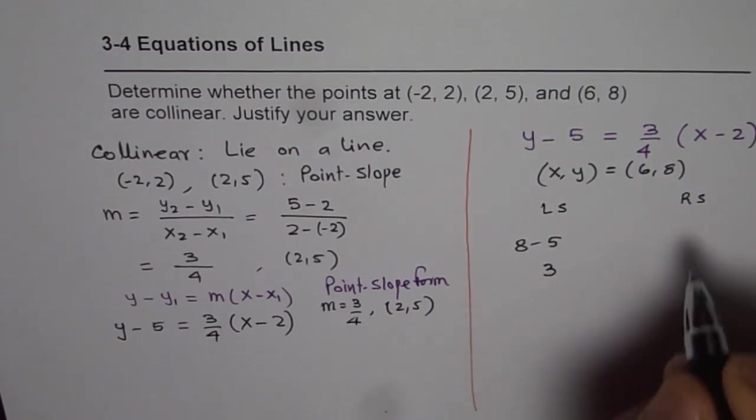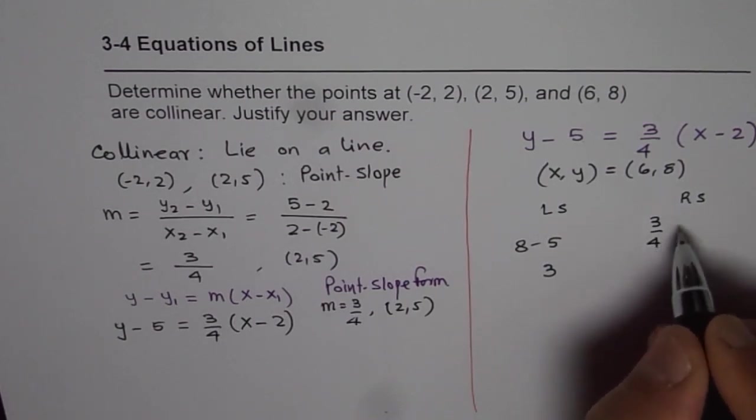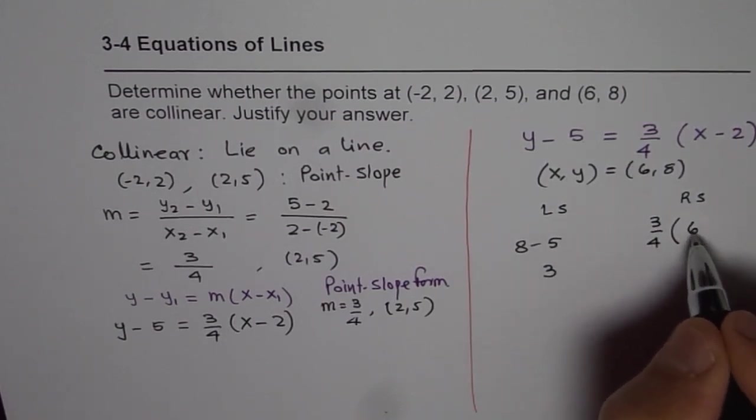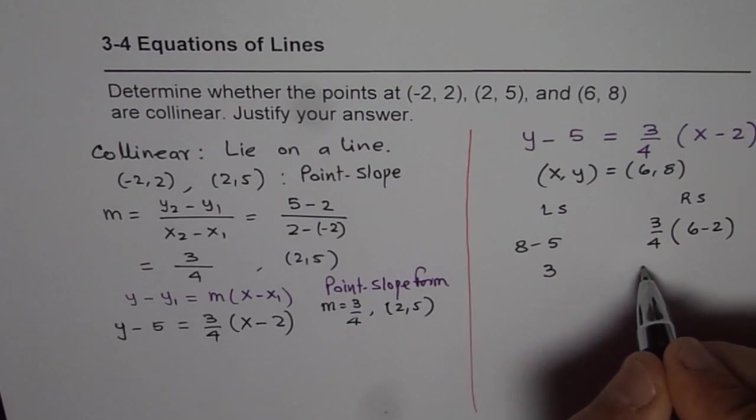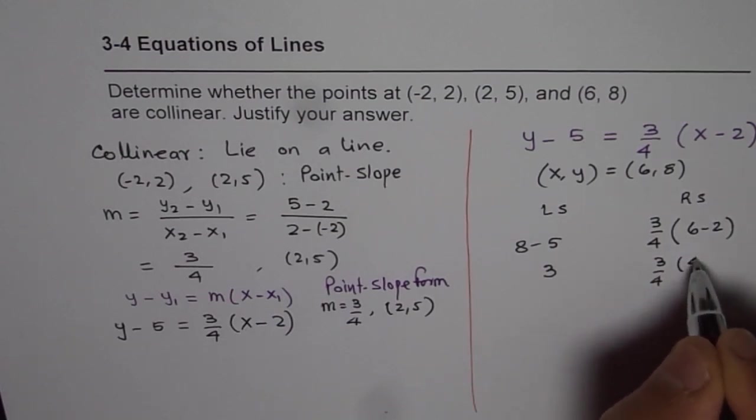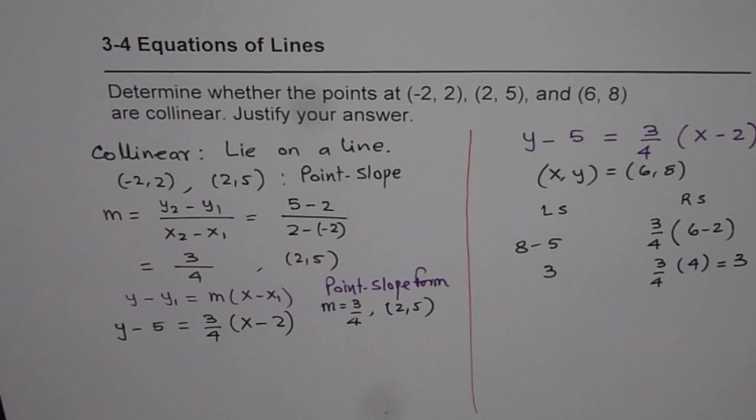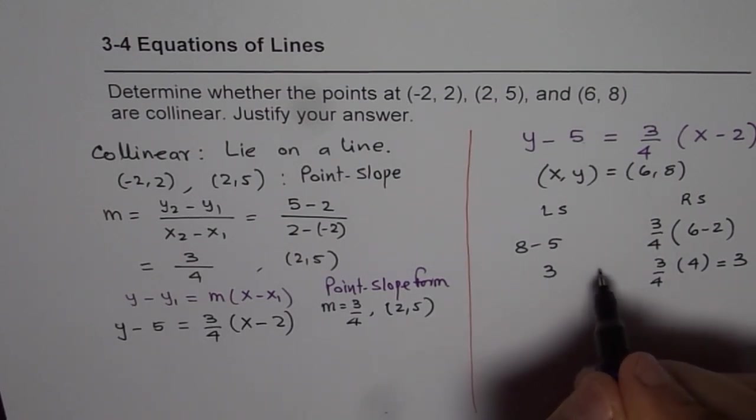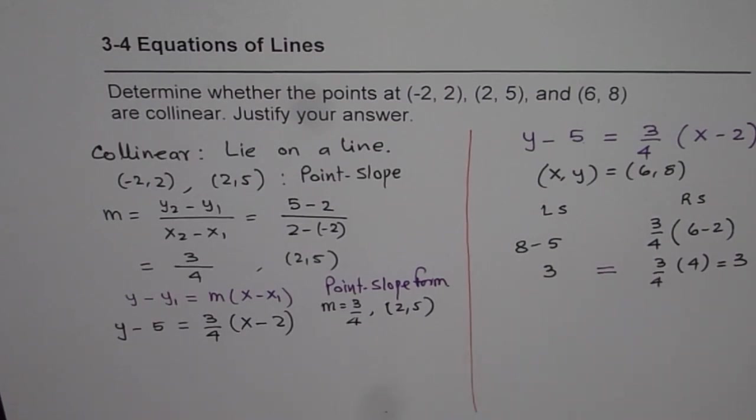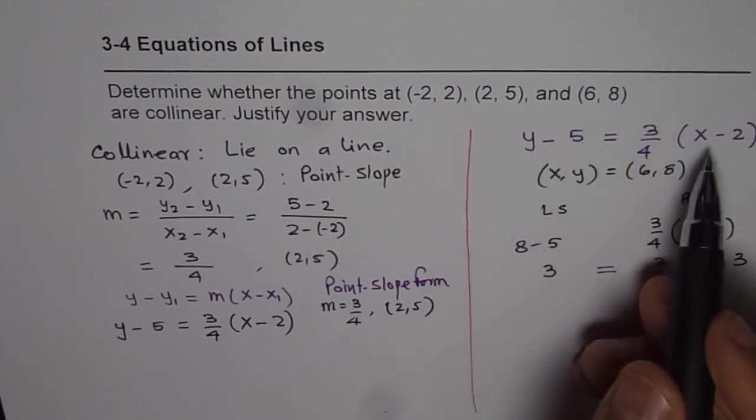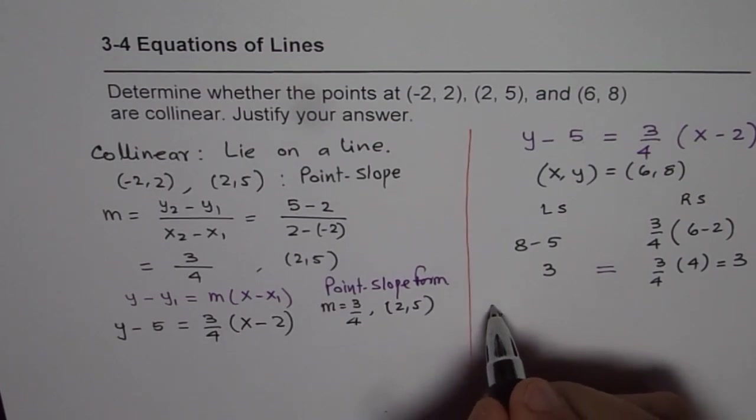So y is 8, so 8 minus 5 on the left side gives us 3. On the right side we get 3/4 times (6 minus 2), which gives us 3/4 times 4, and this is also equals to 3.